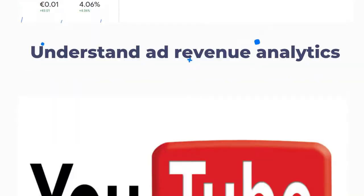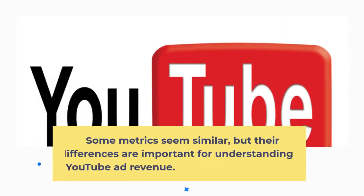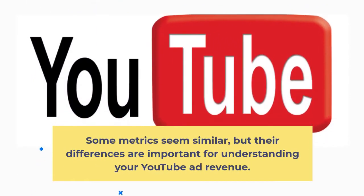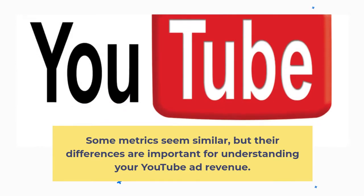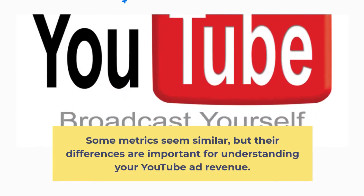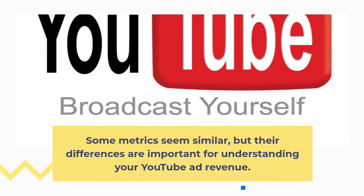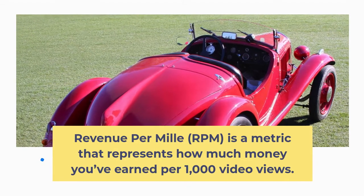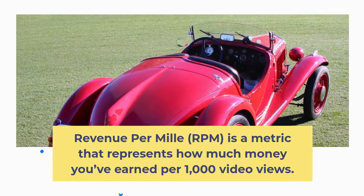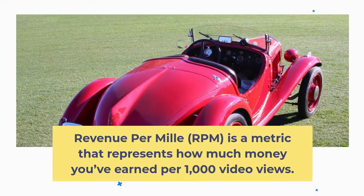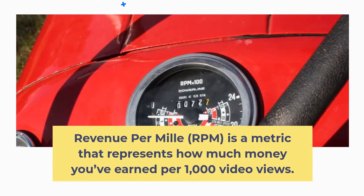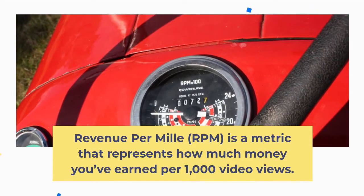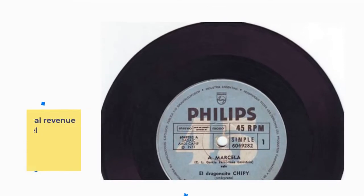Understand ad revenue analytics. Some metrics seem similar, but their differences are important for understanding your YouTube ad revenue. Revenue per mil, RPM, is a metric that represents how much money you've earned per 1,000 video views.